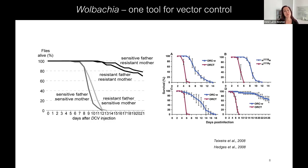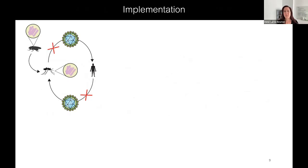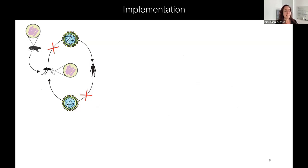Importantly, in the Teixeira paper they also showed that the genome of the virus mattered — DNA viruses were not protected against, whereas RNA viruses were. Wolbachia has since been used as a tool to try to limit the spread of RNA viruses in the environment. The idea was that you could transfer Wolbachia from melanogaster, with its protective effect, into Aedes aegypti, and then release those mosquitoes into populations.